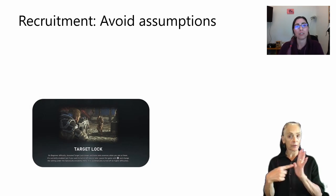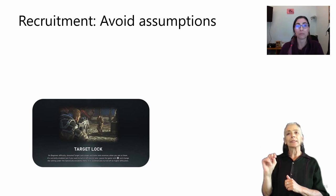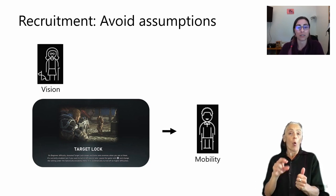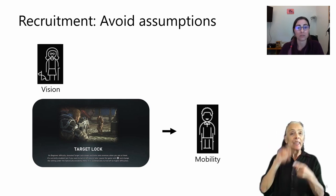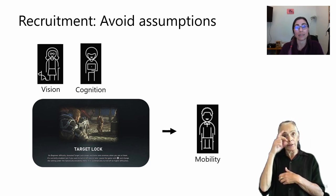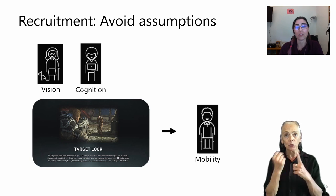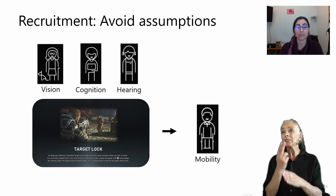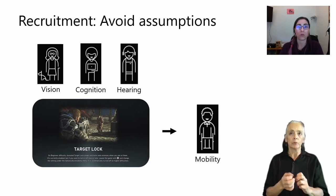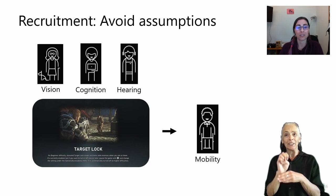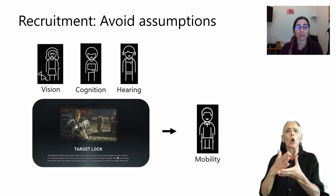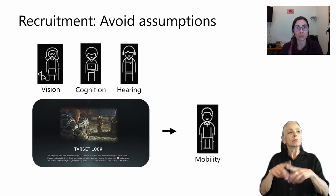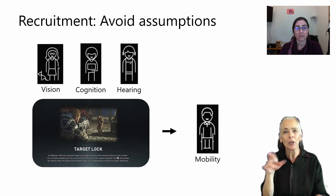Here's another example: think about a feature like aim assist. Some folks might think this feature is primarily for people with mobility disabilities affecting their hands or arms. However, players with low or no vision may also make use of aim assist if they can't use sounds to aim. People with cognitive disabilities might use it to reduce anxiety in combat situations or because they're overwhelmed by visual information. People with auditory disabilities might use it if there are sound dependencies that put them at a disadvantage. Testing the feature with just one group would be like only testing your cooking game with women because you think women are more likely to play — we wouldn't do that.